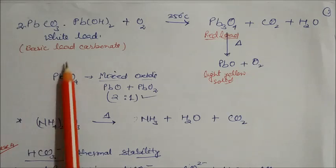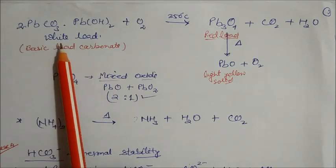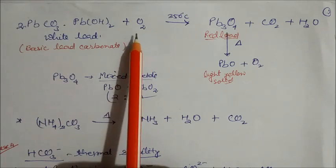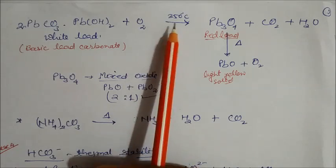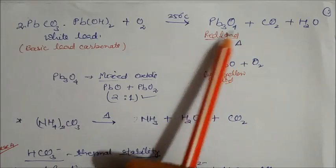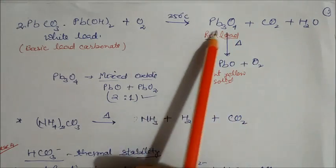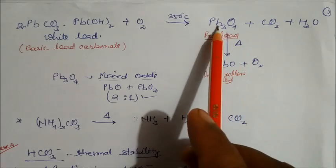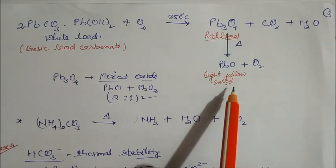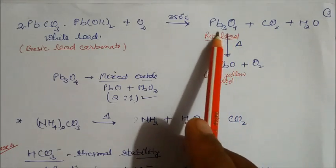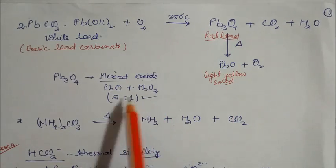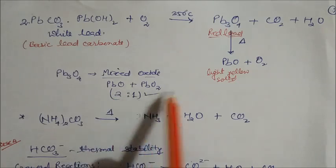Basic lead carbonate, Pb(CO₃)·Pb(OH)₂, also called white lead, on strong heating at around 350°C converts to Pb₃O₄ (red lead) plus CO₂ plus H₂O. If more heat is supplied, it further decomposes into lead oxide plus oxygen. Lead oxide is light yellow and solid; Pb₃O₄ is a mixed oxide combining PbO and PbO₂ in a 2:1 ratio.